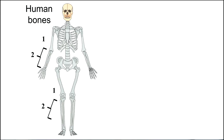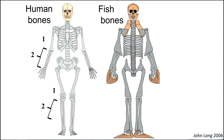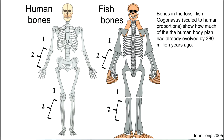If you take the fish bones — if you look at a fossil fish from 380 million years ago and scale it out to look like a human being, this is what you get. They're fish bones. They've got a vertebrate, they've got ribs, and then they have that one and two pattern in the fins, and the same in the legs of the fish. These are the bones of a fossil fish called Gogonesis, scaled to human proportions, showing how much of the human body plan had already evolved by 380 million years ago.